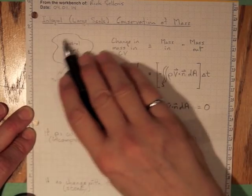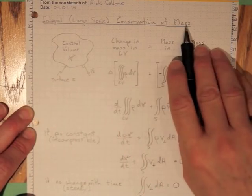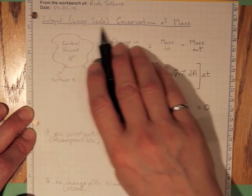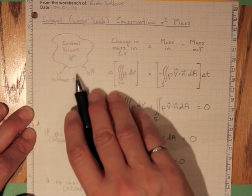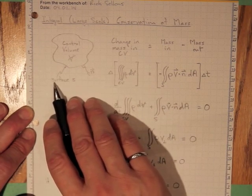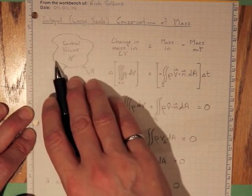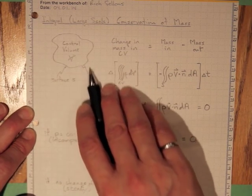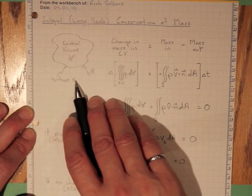So if we have a large control volume and we want to look at the consequences of conservation of mass on that large scale or integral control volume, then we need to keep track of all of the stuff that goes in across this surface S and all of the stuff that comes out across this surface S.